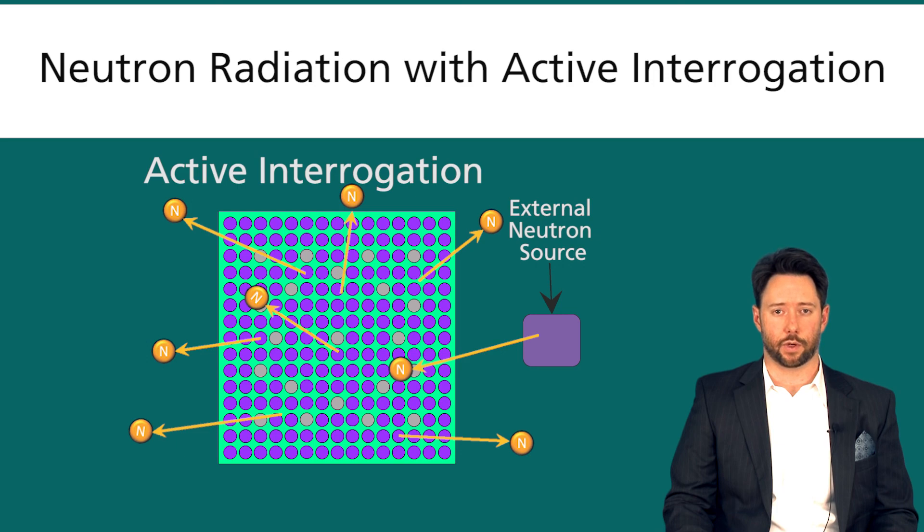So you get many more neutrons, and you also get a neutron signal from your uranium-235 and plutonium-239 with active interrogation that you don't see when you do passive interrogation.